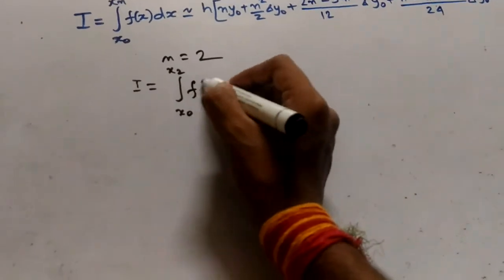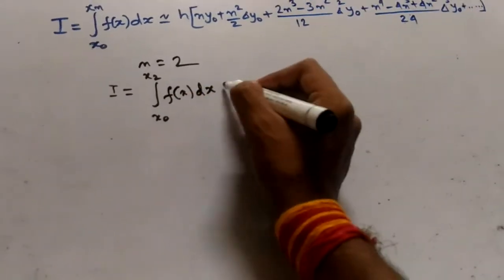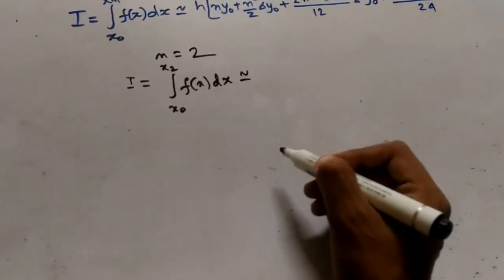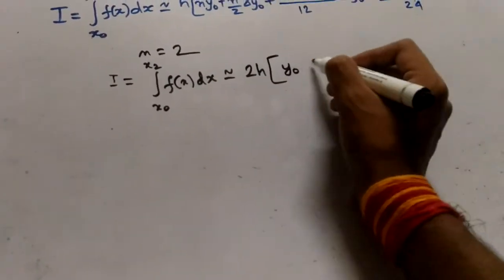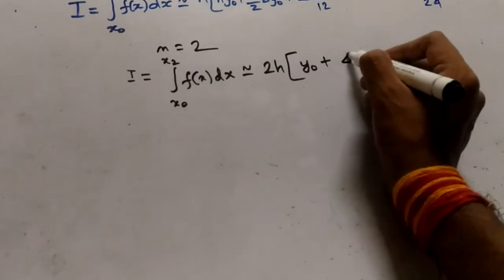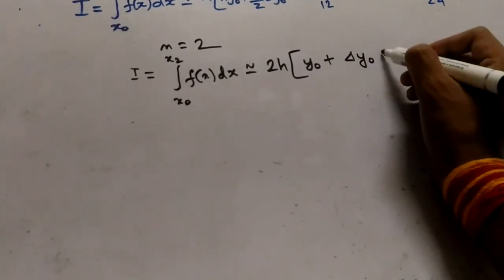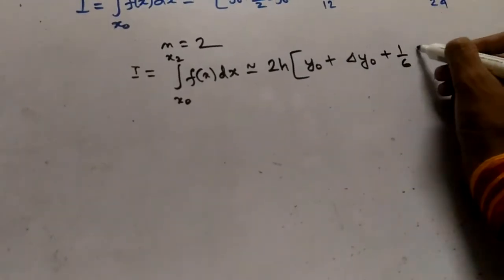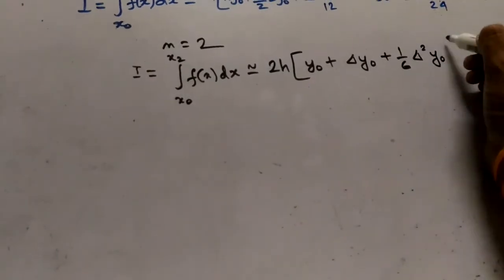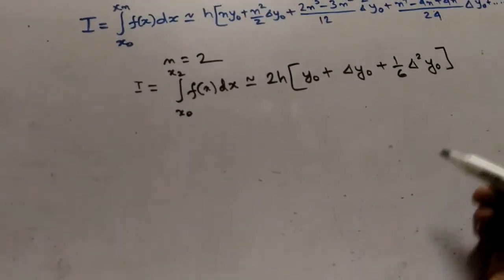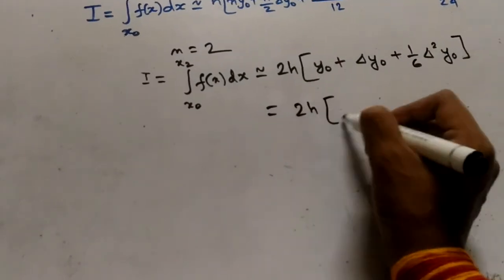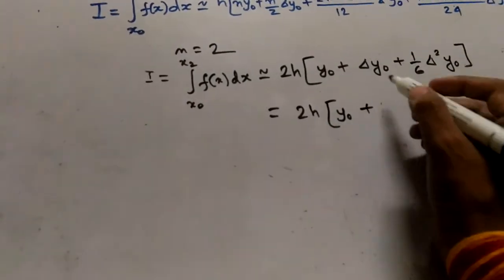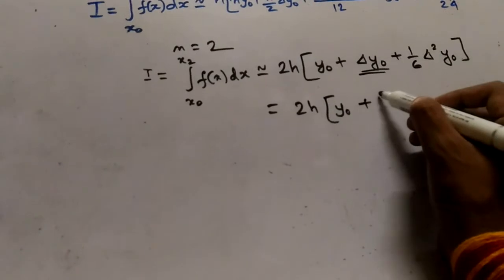This is approximately equal to 2h times y0 plus del y0 plus 1/6 del square y0. This equals 2h into y0 plus I will break this del y0 term and write it as y1 minus y0.